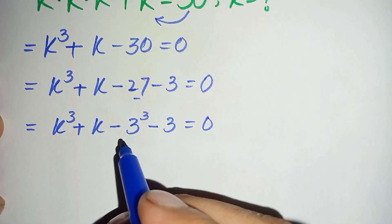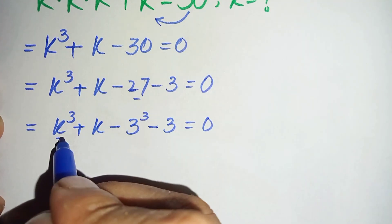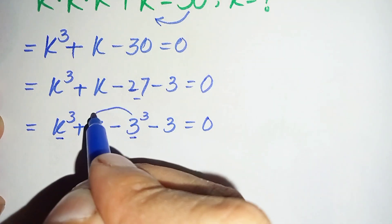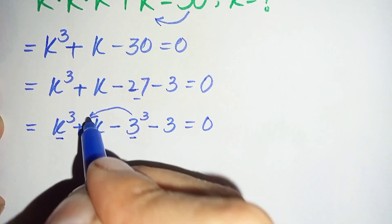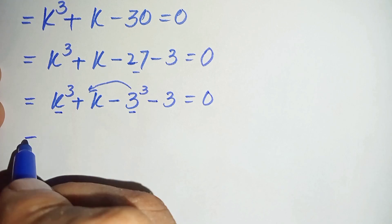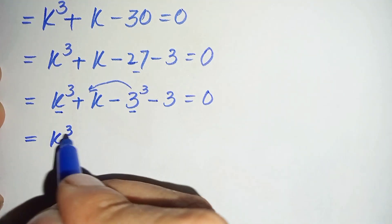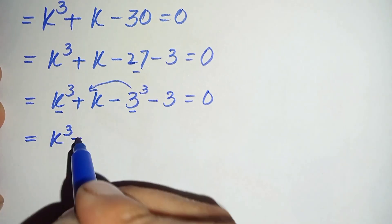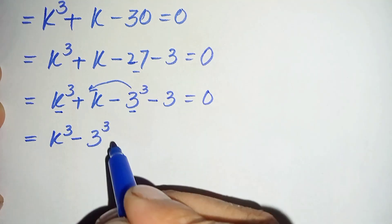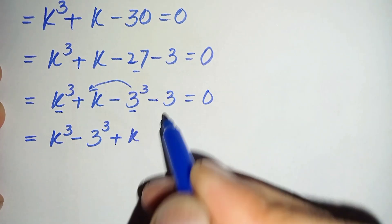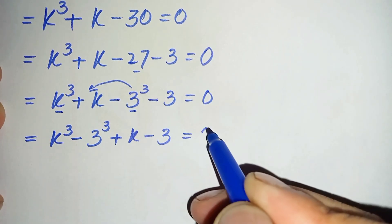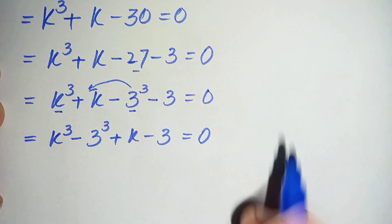This becomes k cube plus k minus 3 cube minus 3 is equal to zero. We will combine the cubic terms: k cube and 3 cube. Moving 3 cube, this becomes k cube minus 3 cube plus k minus 3 is equal to zero.